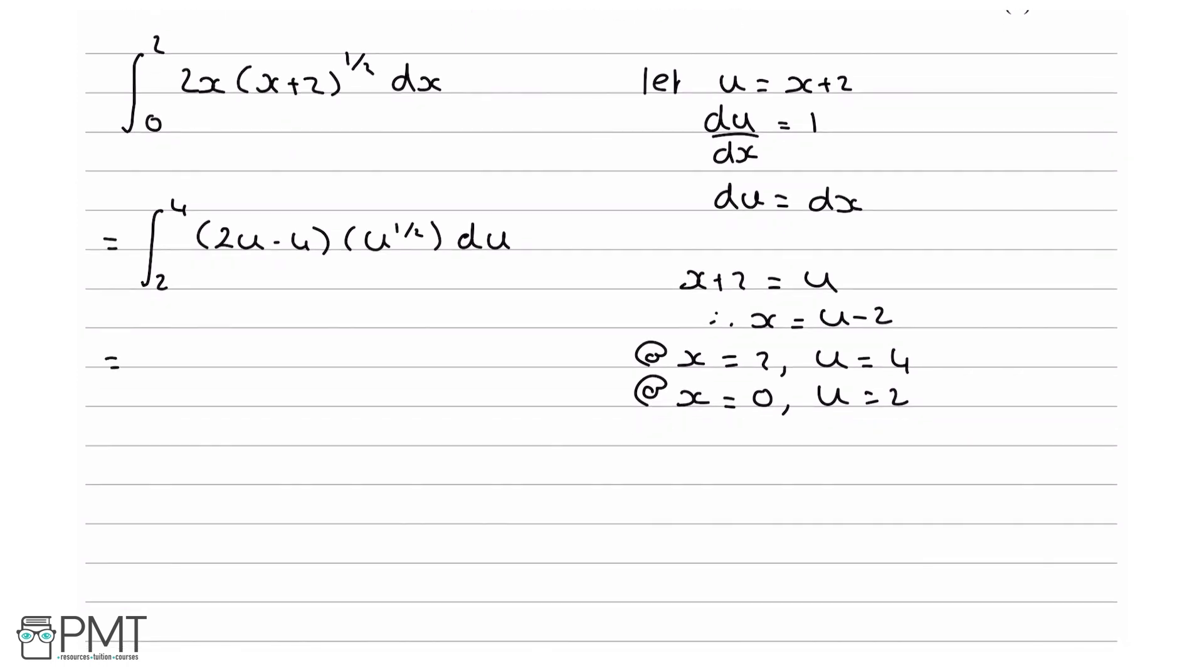I'm going to expand the brackets out now, so it's going to become the integral from 2 to 4 of 2u times u to the half. That's going to be 2 and then u to the 1 plus half is going to be u to the 3 over 2, and then minus 4u to the half du. So what I've done here is 2u times u to the half and minus 4 times u to the half.